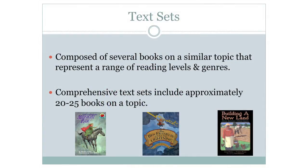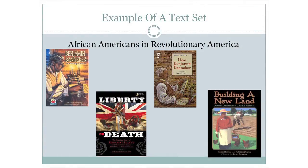Text sets are composed of several books on a similar topic that represent a range of reading levels and genres. Comprehensive text sets include approximately 20 to 25 books on a topic. Here is an example of a text set that we use to explore African Americans in revolutionary America. The texts within each of the text sets received recognition or were awarded as quality fiction or non-fiction by nationally recognized groups such as the American Library Association, International Reading Association, and the National Council of Social Studies.